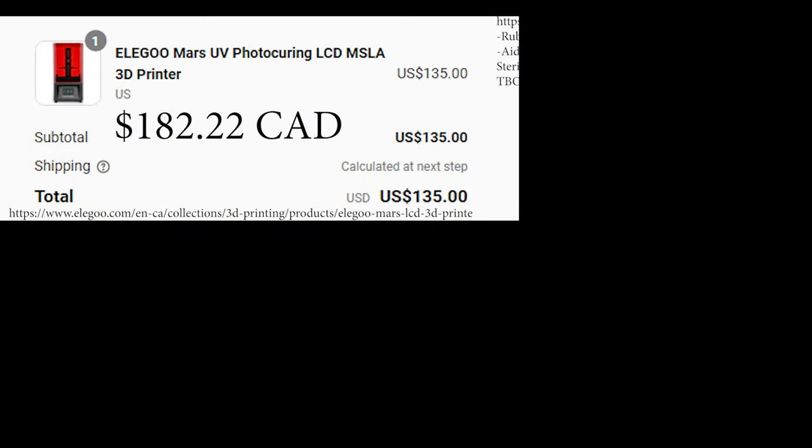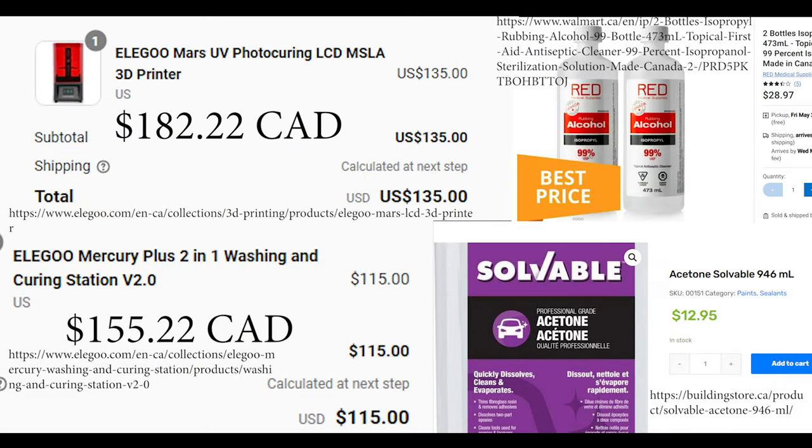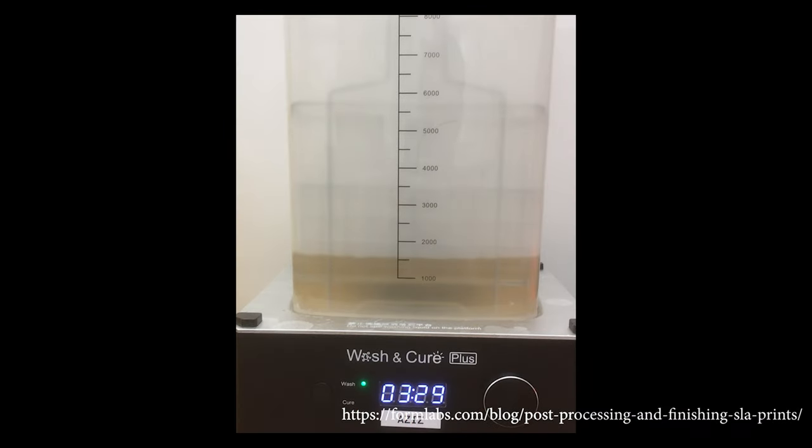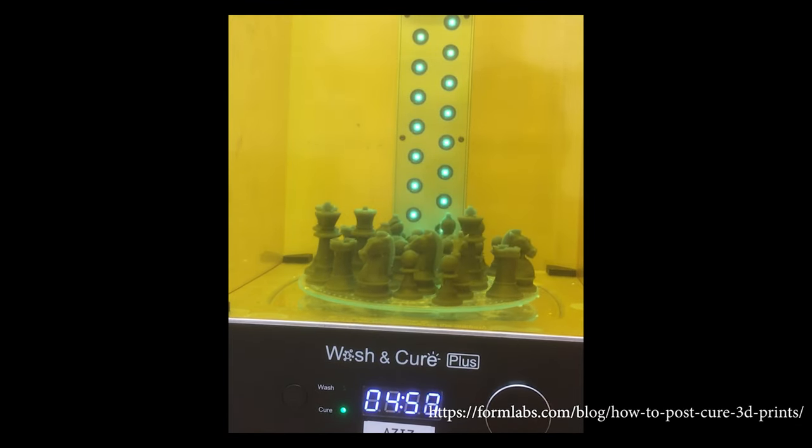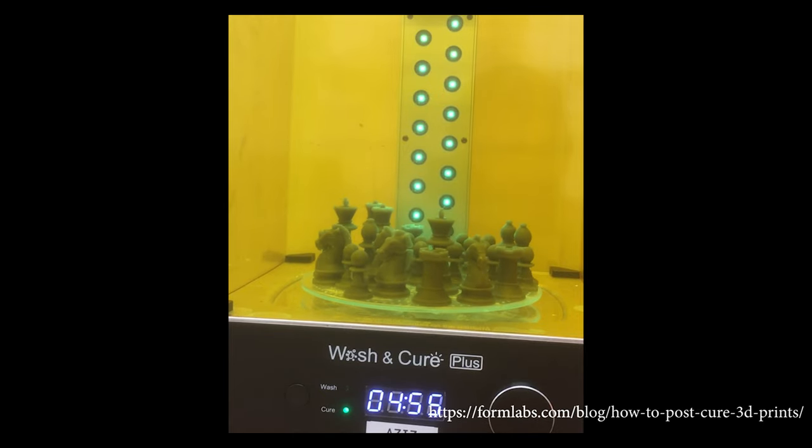Disadvantages. The printer itself is cheap, but the post-processing of resin prints adds to the full cost. Every print needs to be washed with a solvent to remove the uncured resin. Then, they need to be cured with UV light to reach the full mechanical properties from the resin.